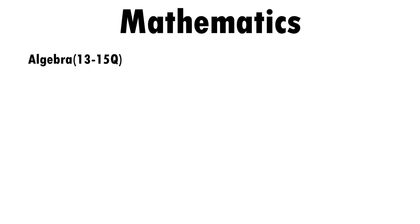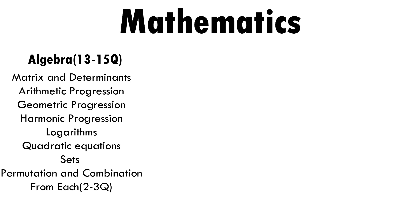For mathematics, let's look at how many questions from algebra — matrix and determinants, progressions (AP, GP, HP), logarithmic and quadratic equations, sets, permutation and combination. You will get hardly two to three questions from each topic — minimum one, maximum three. From previous year trends, for the entire algebra part you will get around 13 to 15 questions.